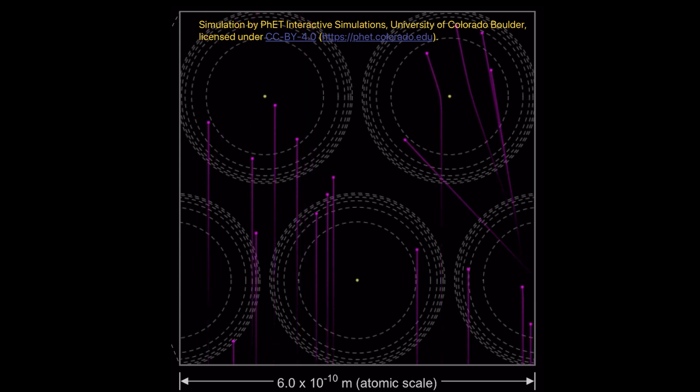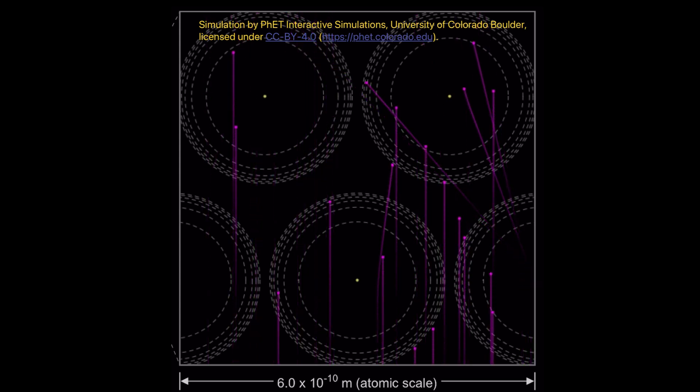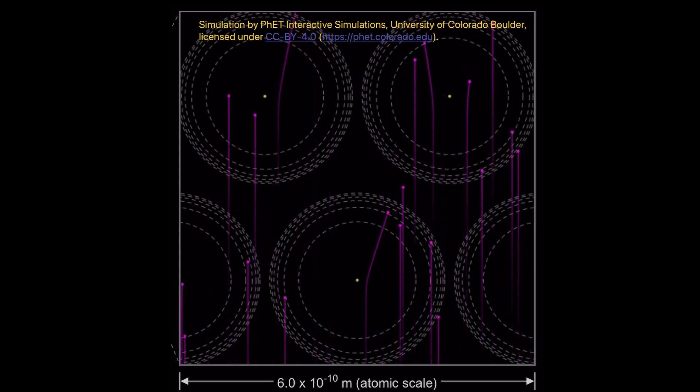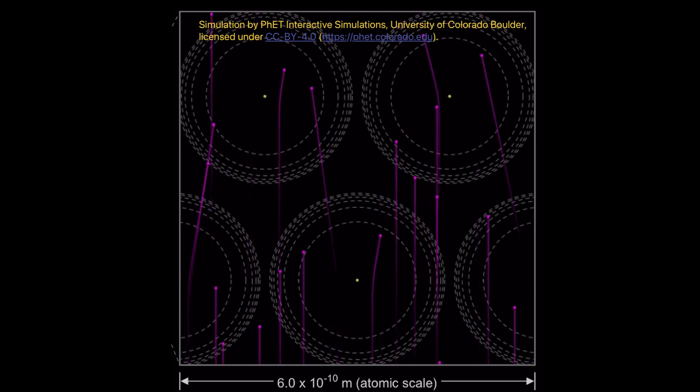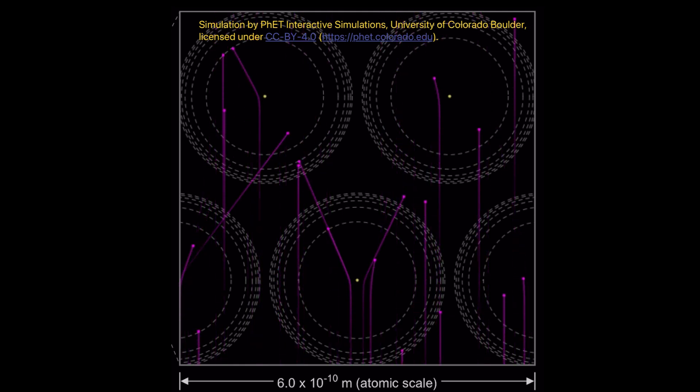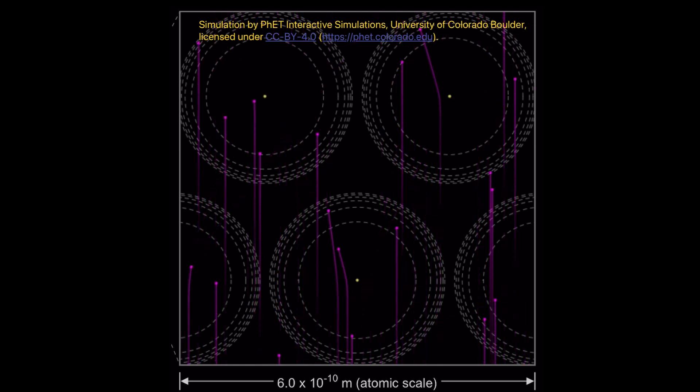Again you can use the great PhET simulation, this time showing the nuclear model of the atom which shows that most of the alpha particles pass through without being deflected but occasionally they go very close to the nucleus and get deflected.